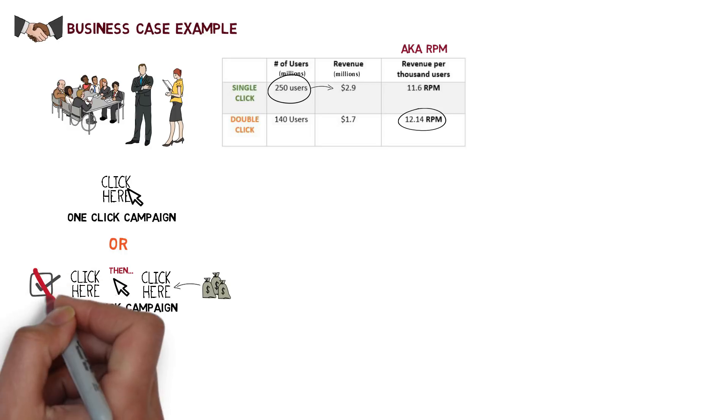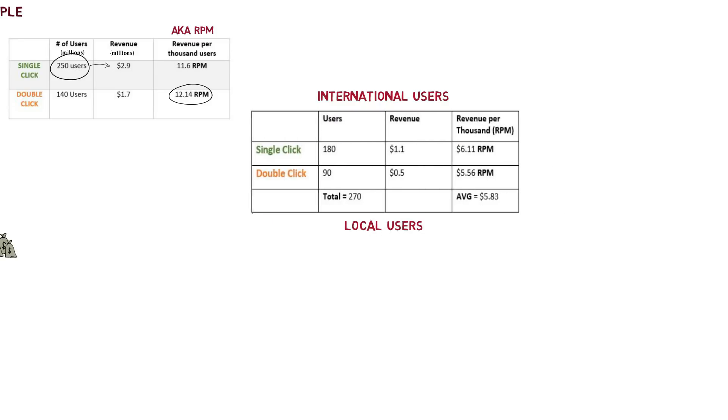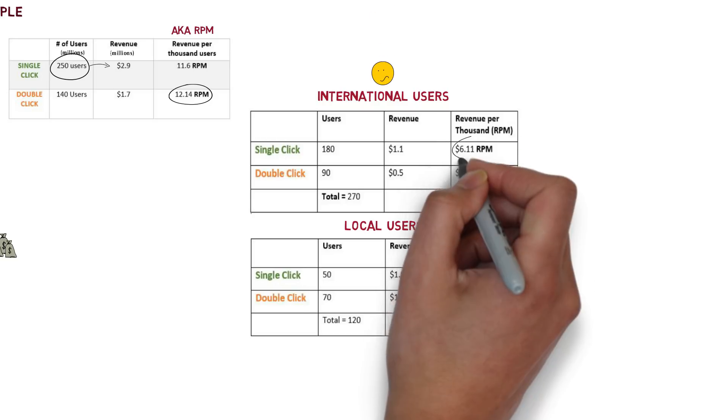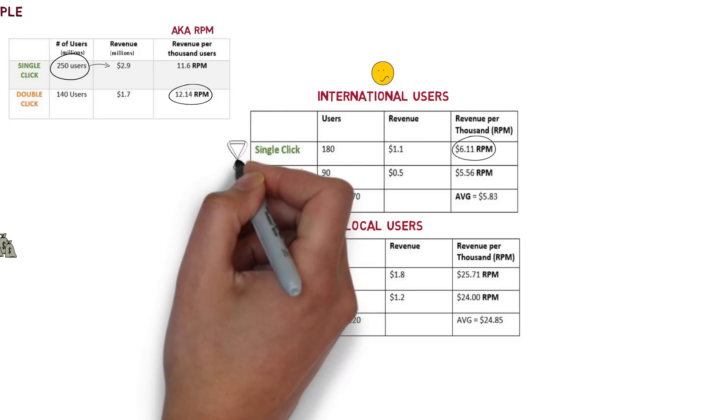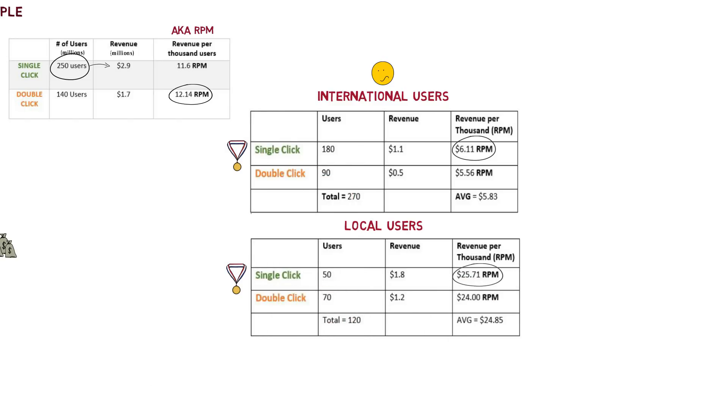Let's break open the data again into its subgroups of international users and local users. Now this is what the data will look like. Suddenly, and once again, the data tells a different story. Single-click is outperforming double-click in both subgroups, local and international. How is this possible?